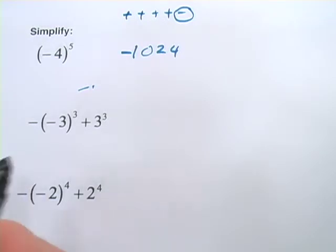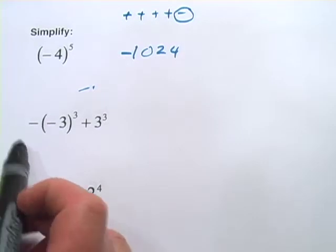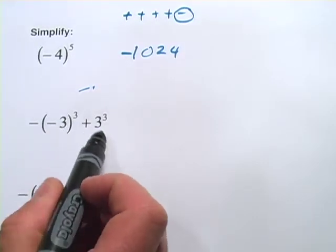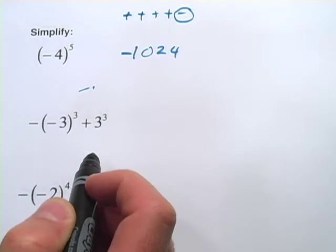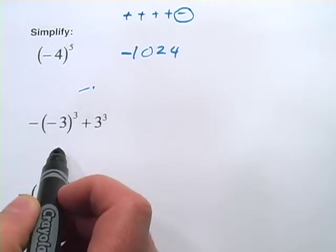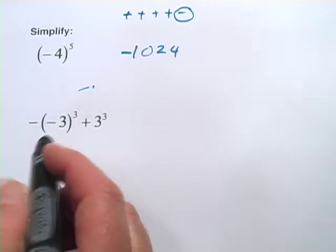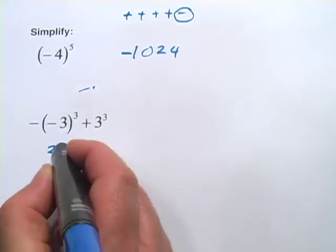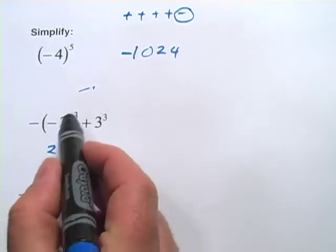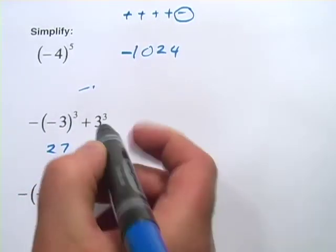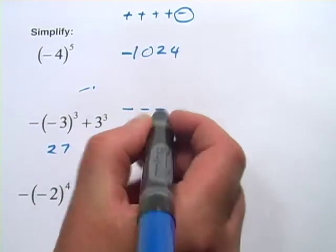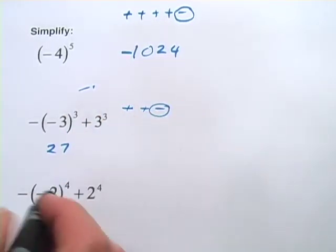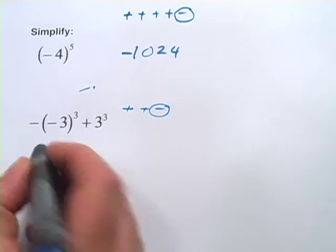Let's look at the next one. It says negative, then parentheses, negative 3 to the third, plus 3 to the third. I like to deal with what's in the parentheses first, and again we'll do this in two parts. 3 to the third is 27. Negative to the third is negative times negative times negative — two of those become positive, but we're left with a negative, so that's negative 27.